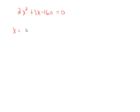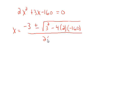x equals the opposite of b, that's going to be -3, plus or minus the square root of b², which is 3², minus 4ac. a is 2, c is -160, all divided by 2a, that's 2 times 2. We'll simplify the discriminant. 3² is 9. This turns into plus 1,280. So that's 1,289, all divided by 4.